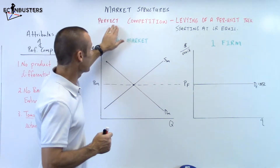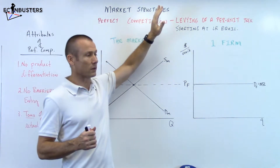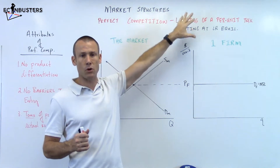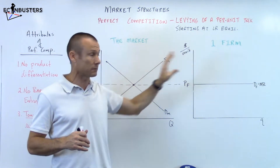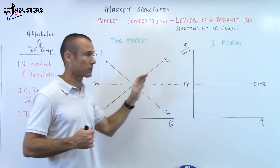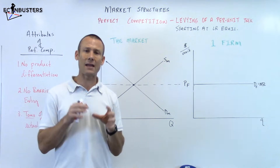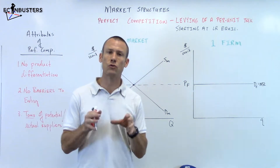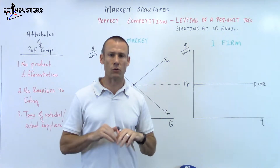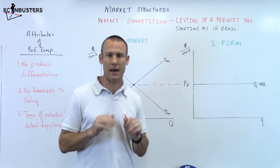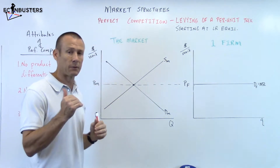We're going to combine two things: per unit taxes with perfect competition. It's going to be a lot of review and it's going to be kind of tough. I've got perfect competition, I've got the market, I've got the firm, and we're going to levy a per unit tax on the market. We want to see the impact on both the market and the firm, and we're going to handle this in two separate ways.